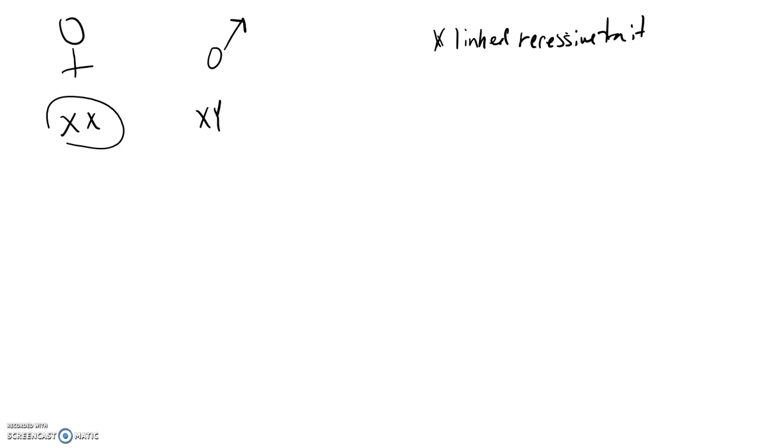However, in a male, there's only one X. So you either have the normal type or you have the affected type. There is no double allele there to be the dominant form. So let's work a couple of problems.